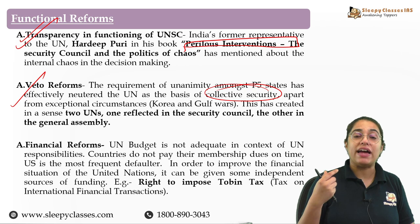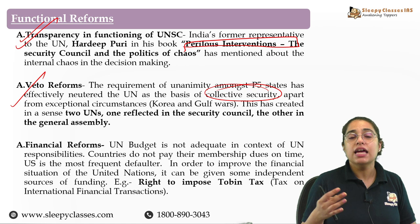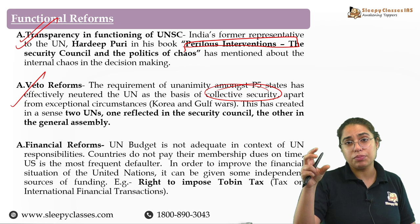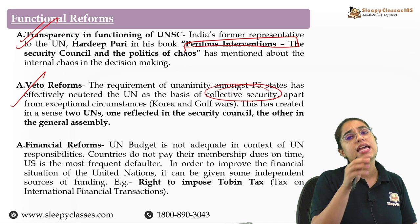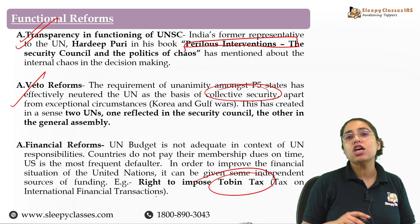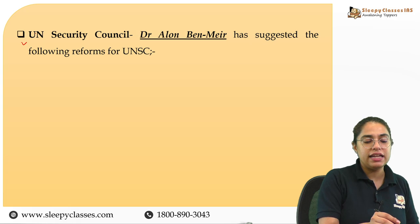Financial reforms are also required for better functioning of not just UNSC but all UN agencies, as they do not receive funding commensurate with their mandate. Some scholars suggest setting contribution quotas for developed, developing, and least developed countries. Others suggest independent funding sources such as the Tobin Tax — a tax on international financial transactions that can go into the UN's kitty to bolster its finances.